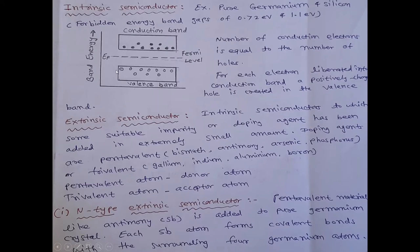This is energy band diagram for this intrinsic semiconductor. See here, band energy is here, on y-axis is here. Here, Fermi level, valence band, conduction band. Now see friends, number of conduction electrons is equal to number of holes. For each electron liberated from this valence band to conduction band, one positive hole is created in valence band.